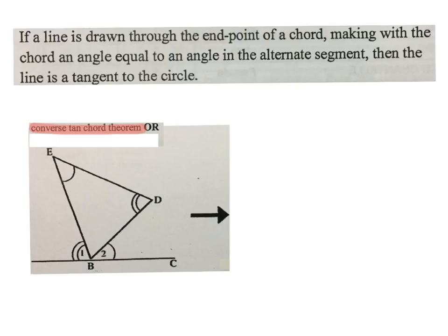Now the converse of the tan chord theorem we do not have to prove. I'm just reading it to you. It says if a line is drawn through the end point of a chord making with the chord an angle equal to an angle in the alternate segment, then the line is a tangent to the circle.